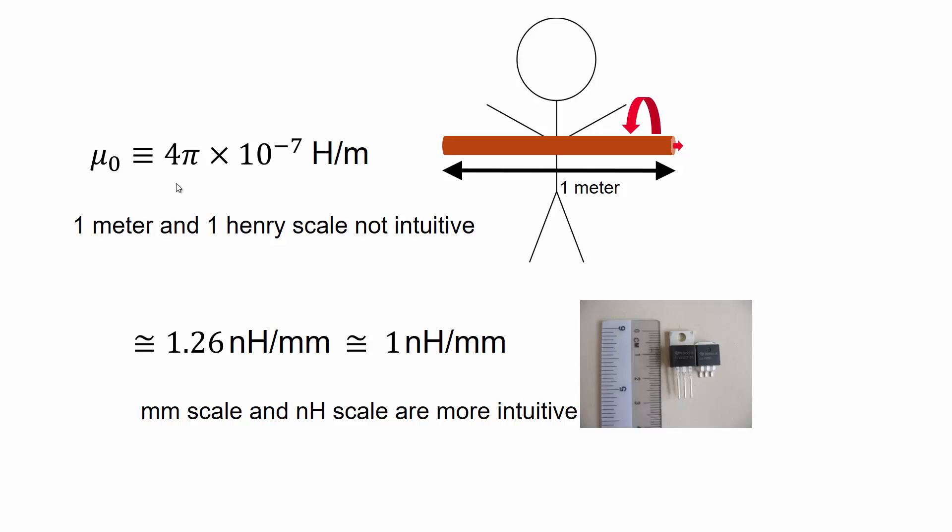Now in SI units, the permeability of free space μ₀ is actually defined to be 4π times 10 to the minus 7 henries per meter exactly. But the problem is one meter and one henry scale is not really intuitive.